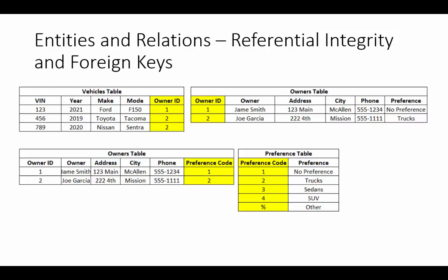Next, we have referential integrity and foreign keys. The first example has two tables — the Vehicle table and Owner's Table — both linked by Owner ID. This linkage is called a foreign key. Referential integrity means this linkage must be correct: we cannot have an Owner ID in the Vehicle's table that doesn't exist in the Owner's table, and we cannot have a vehicle sold without the owner's information. In the second example, linking the Owner's Table to the Preference Table, referential integrity ensures we don't have a preference code that doesn't exist in the Preference Table.